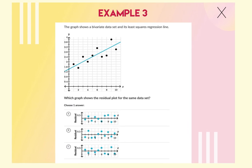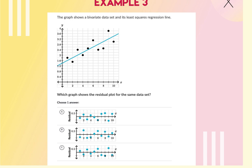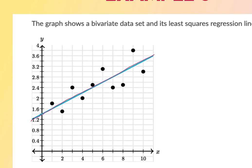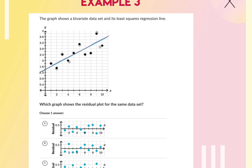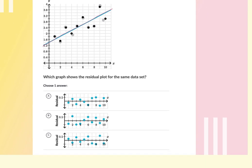This problem shows a bivariate data set with its least squares regression line and asks which graph shows the residual plot. At x equals 1, the data point is above the regression line, so in the residual plot, that dot should be above zero. Only answer C has that. Checking x equals 2: the dot is below the line, so R is negative. Continuing that pattern confirms the answer is C.